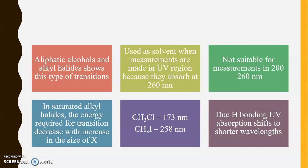Due to hydrogen bonding, the UV absorption shifts to shorter wavelength. Hydrogen bonding stabilizes the ground state, and because the ground state is more stabilized, more energy is required to carry out the transition, causing a shift to shorter wavelength. This is the summary of the n to sigma star transition, which requires the second highest energy compared to the sigma to sigma star transition.